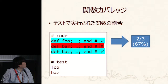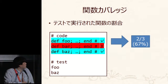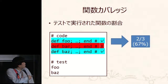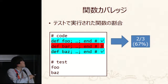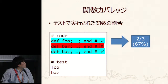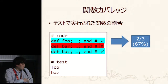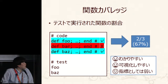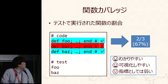Let me explain one by one. Functional coverage is very simple — it measures the percentage of functions defined in the program which are called upon. For example, there are three functions: foo, bar, and buzz. Foo and buzz were called upon, so foo is covered and buzz is also covered, but bar was not covered. So out of three functions, two were executed — the ratio is 67%. This is very easy to understand and easy to visualize; those are the benefits.